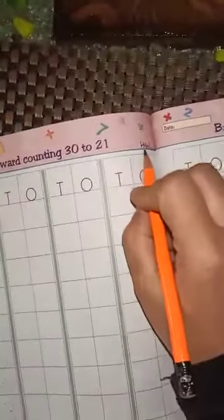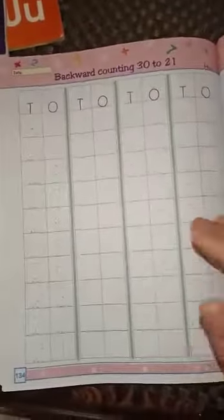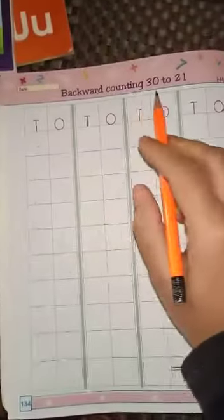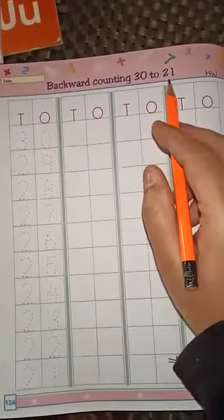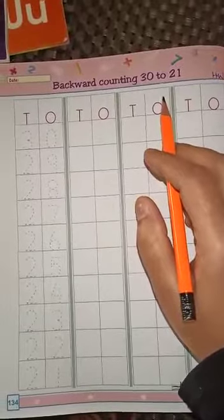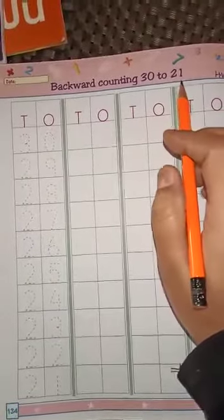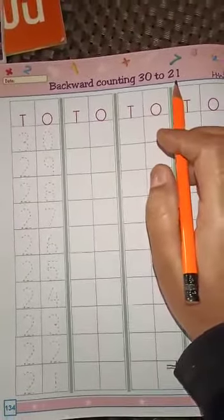Write the date here and homework on the right side. Today we will do backward counting 30 to 21. Aaj hum backward counting kareenge 30 to 21.